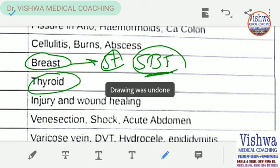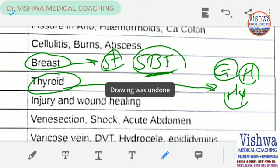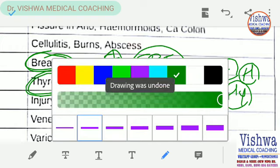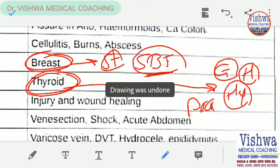Thyroid — remember goiter swelling; we have hypothyroidism and hyperthyroidism. Breast as well as thyroid can also be a practical case for you, and can be asked as important cases in the practicals. This is also an important thing to write in the exams.